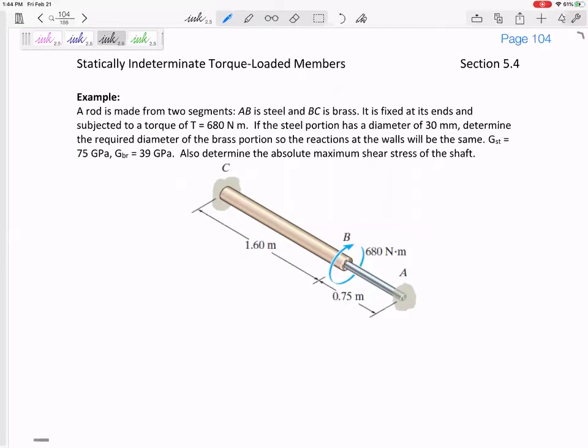Okay, so this is kind of interesting. Determine the required diameter of the brass portion. So AB is steel, BC is brass. Determine the required diameter of the brass portion so that the reactions at the walls will be the same.